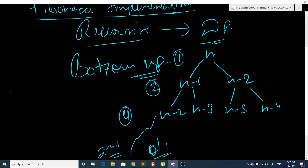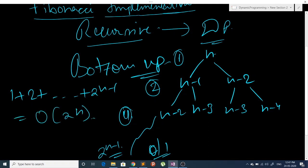So our time complexity will be 1 + 2 + ... + 2^(n-1), which equals O(2^n). This is our time complexity with basic recursion.